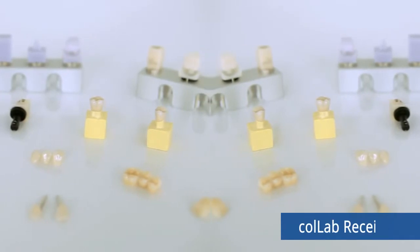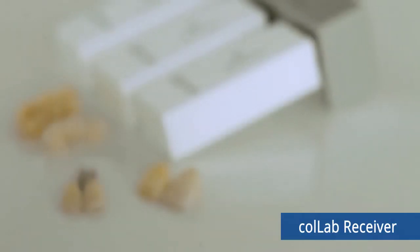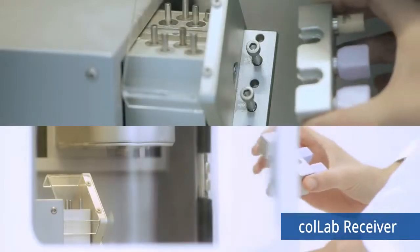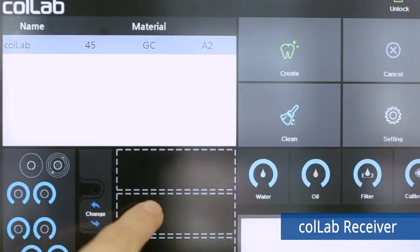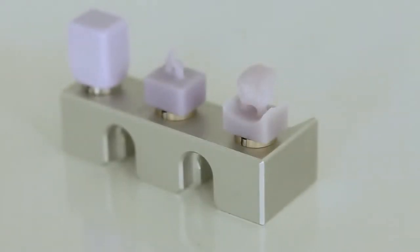From glass ceramic to custom abutment, the CoLab Receiver can process various materials which are also very easy and simple to use. Equip CoLab Sender with the material to be milled. Select a file to mill on the monitor. Click the Create button.